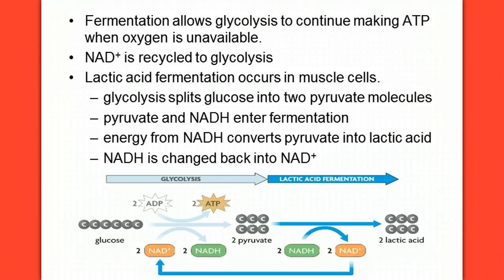So let's look at this. If I've got glycolysis occurring, I start with glucose. Two ATP are made, two NADH are made. The two pyruvates here move into lactic acid fermentation.